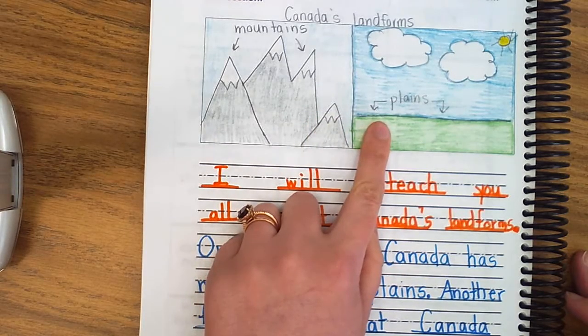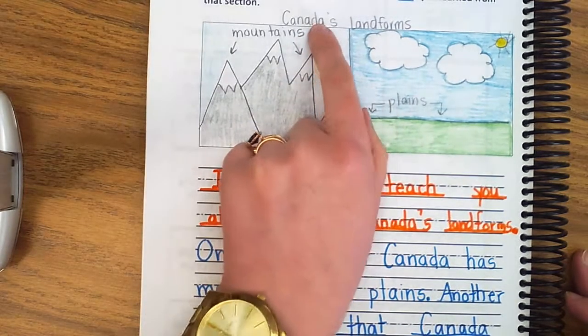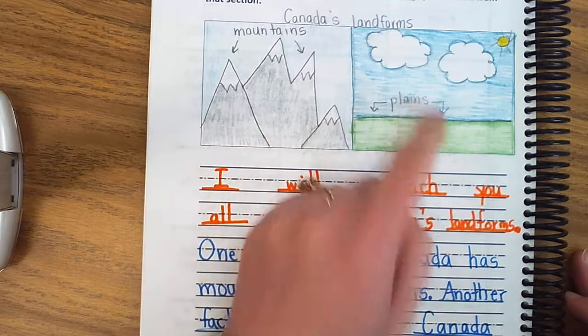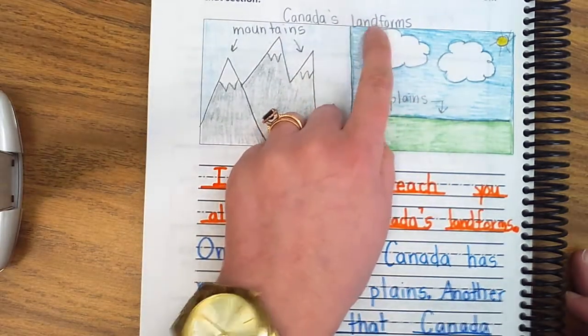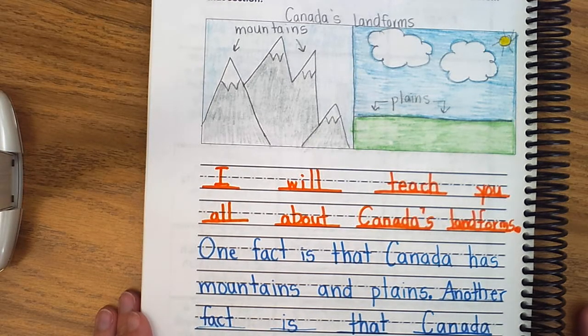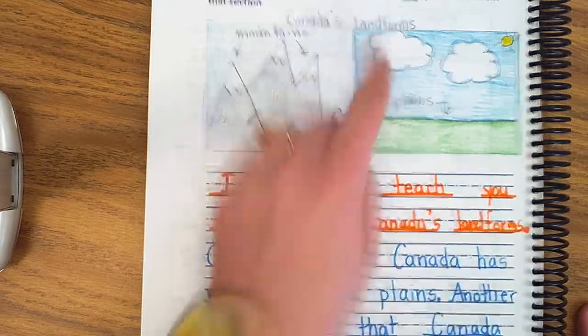So I started off with my teaching picture that is not only labeled but I actually gave it a heading, so that way my reader would know exactly what these pictures were. They're showing me Canada's landforms, not the United States landforms, not France's landforms, not Brazil's landforms, but Canada's landforms.